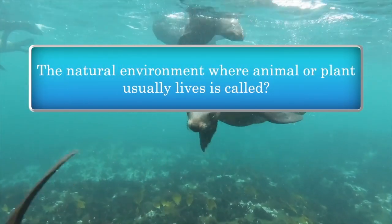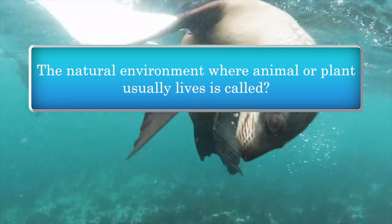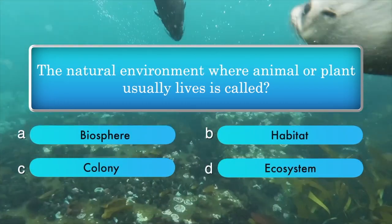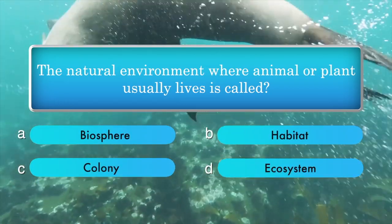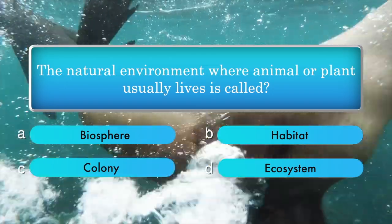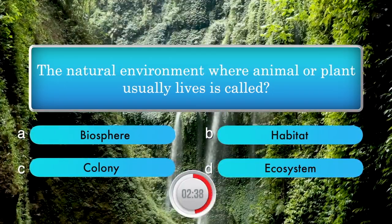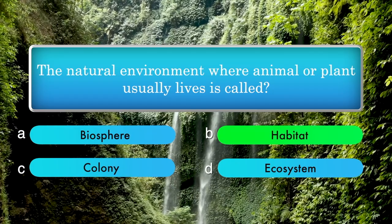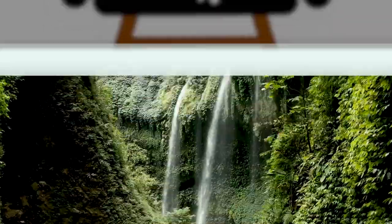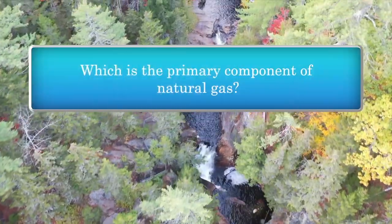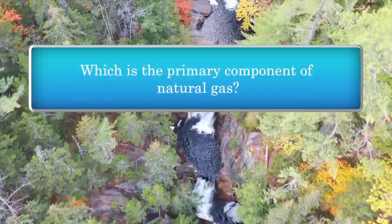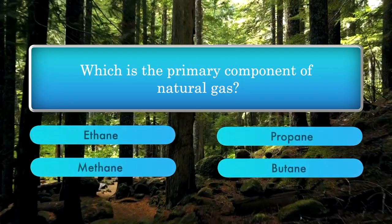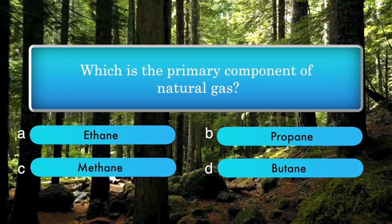The natural environment where an animal or plant usually lives is called — options: biosphere, habitat, colony, ecosystem. Answer is habitat. Which is the primary component of natural gas? Options: ethane, propane, methane, butane. Answer is methane.